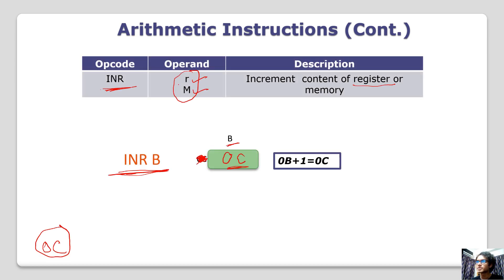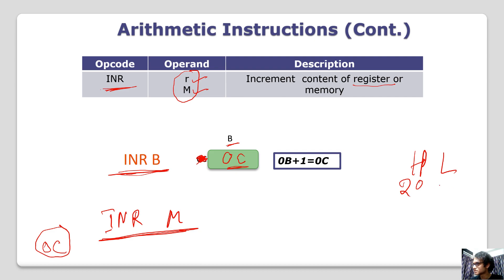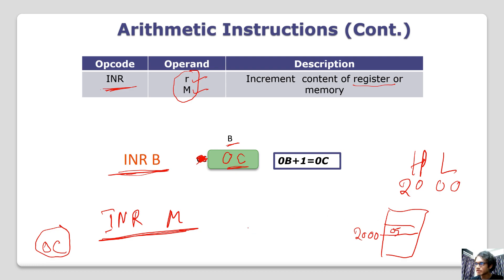I will show you the memory location. INRM uses the HL register pair. HL is 2000. I will show you the memory location 2000. It is 2000. The value at that memory location is 05.